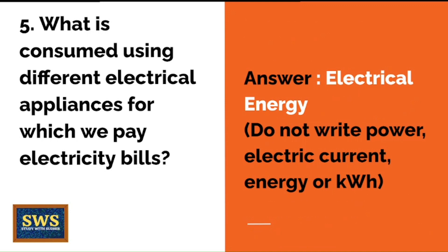What is consumed using different electrical appliances for which we pay electricity bills every month? The correct answer is electrical energy. Be careful — do not write power, electric current, or kilowatt hour. Just write energy. Be careful about the exact term for a simple question like this.